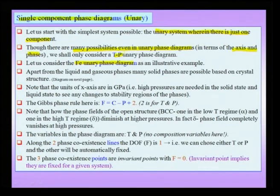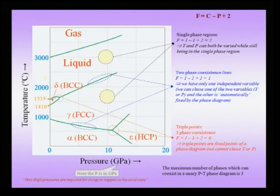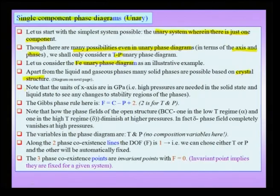Apart from the liquid and solid state, there are many phases possible, and in the solid state we can differentiate many phases based on crystal structure. So let us have a look at the unary phase diagram of iron, where pressure is one of the variables along the x-axis and temperature is the other variable along the y-axis. There is just one component, which is iron, and we are varying these two variables to find out what happens to the phases as we change temperature and pressure.